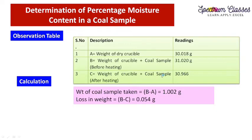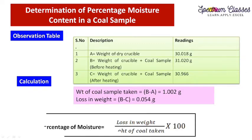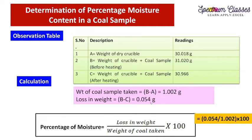Since some volatile material escaped, the sample has less weight after heating. B minus C gives the loss in weight. The percentage moisture is calculated as: (loss in weight / weight of coal sample taken) × 100. The loss in weight is 0.054 grams divided by the weight of the coal sample, multiplied by 100, giving 5.38% moisture. This means our sample is dry enough.